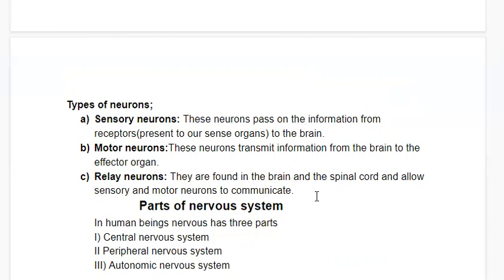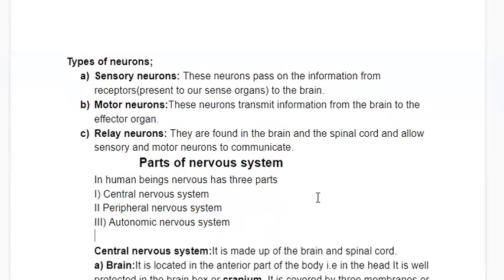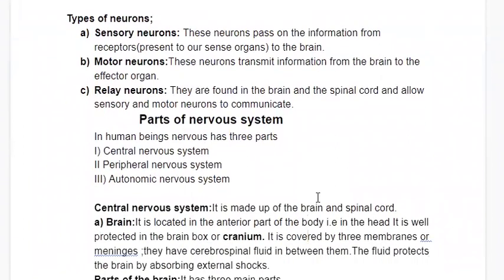Relay neurons help sensory and motor neurons communicate with each other. If we talk about the parts of the nervous system, there are three parts: the central nervous system, the peripheral nervous system, and the autonomic nervous system.